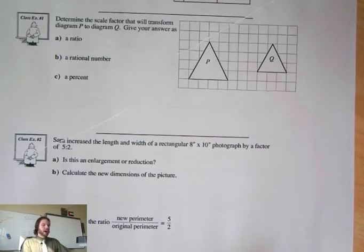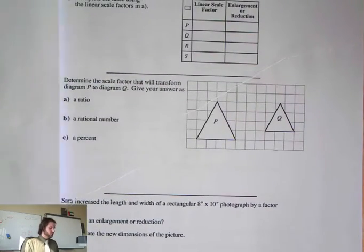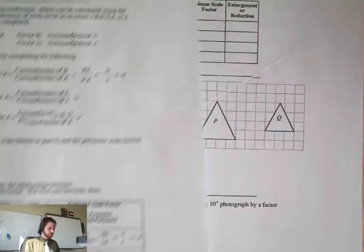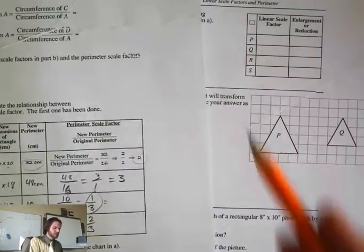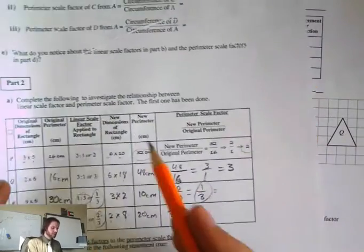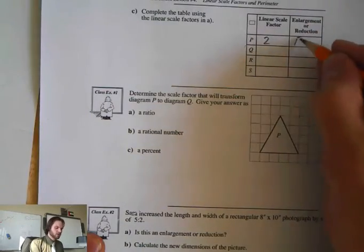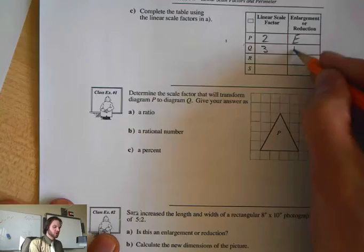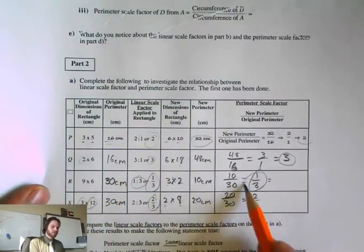Now, it wants us to look back, which ones are enlargements and which ones are reductions. So if I look at P, P was a scale factor of 2, and that was an enlargement. Q was a scale factor of 3, and that was an enlargement as well.